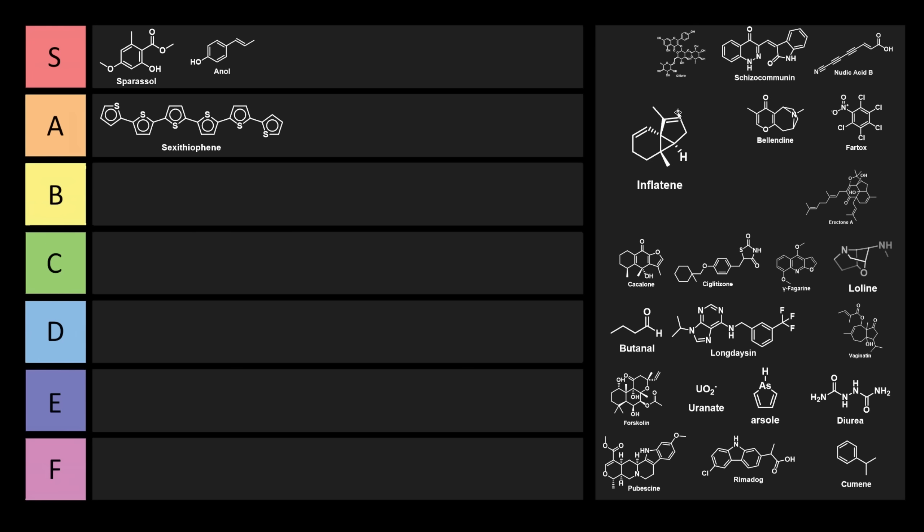This is also kind of a neat one, because you can see it's got a cyclopentene, a cyclohexene, as well as a cyclopropane. So inflatine is a little bit unfortunate for sure, but I don't think it's too bad. I think we can put that one right into D tier.